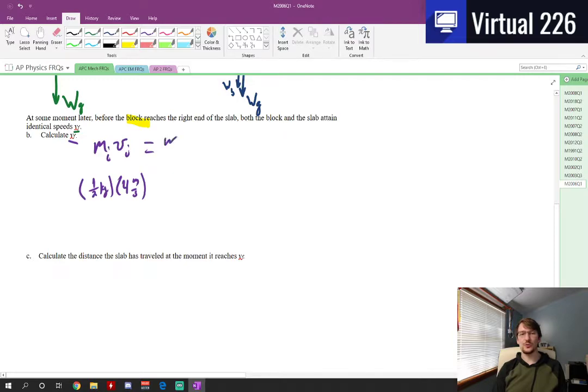This has to equal all of the final momentums that we have. So this would be equal to the momentum of the block plus the momentum of the slab. Well since they both have the same final velocity, we can actually combine like terms here and our final mass is going to be the combination of the block plus the slab. And that's going to have some final speed at the end.